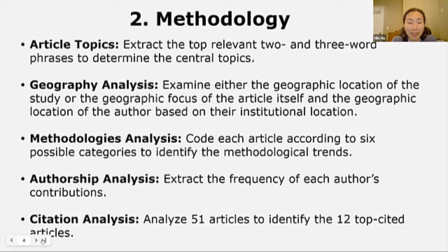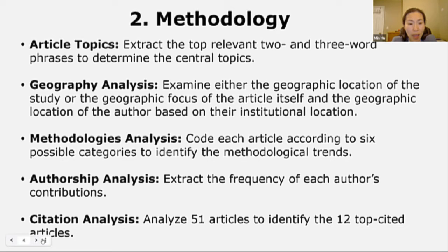As for authorship analysis, we conducted an analysis of authorship by extracting the frequency of each author's contribution, and we then employed a point scale, giving first authors three points, second authors two points, and third authors and beyond one point. For citation analysis, we analyzed Google Scholar using the Publish or Perish software to examine the number of citations for each article as of December 31st, 2018, and we analyzed all 51 articles published between 2015 and 2018 to identify the 12 top cited articles, each of which was cited seven or more times.